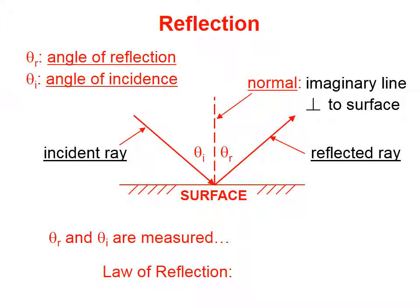An angle of an incident ray or a reflected ray is not measured relative to the surface. It's measured relative to this imaginary line we call the normal.